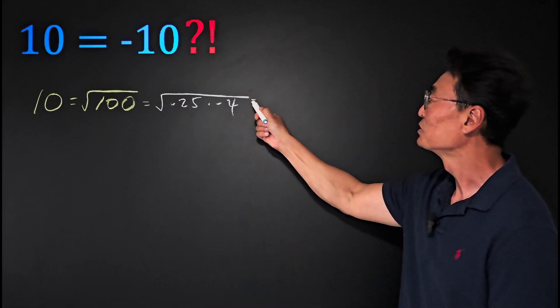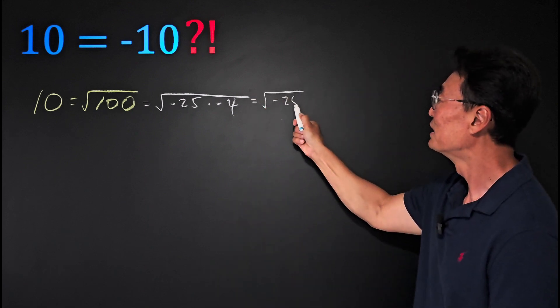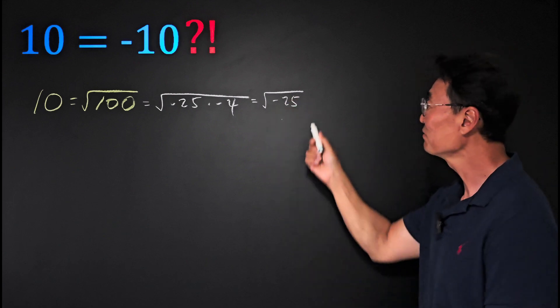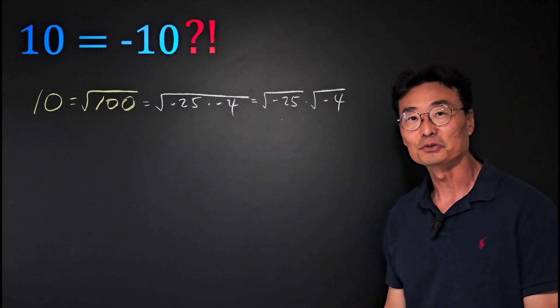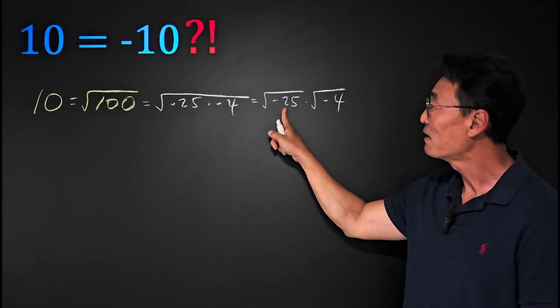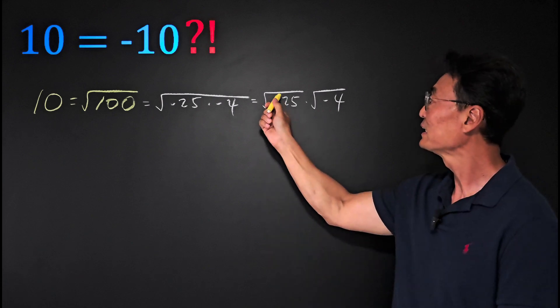Next I'm going to change this into square root of negative 25 times square root of negative 4, two separate square roots. Now that I have a negative number inside the square root, I need to take that negative sign outside and turn it into an i.